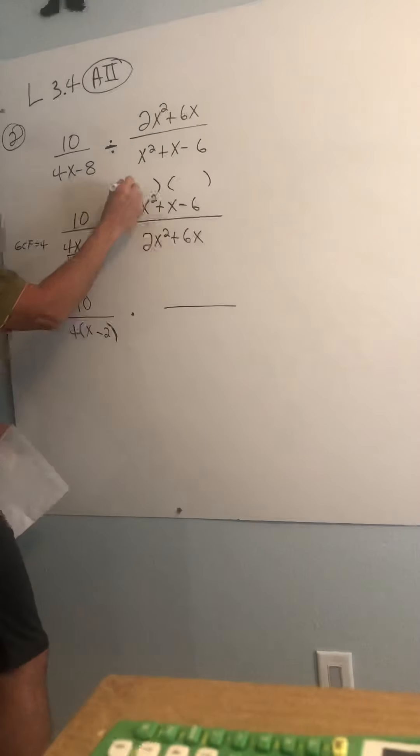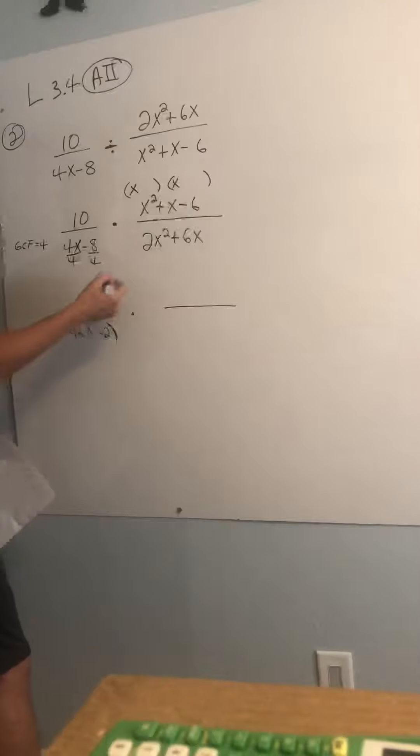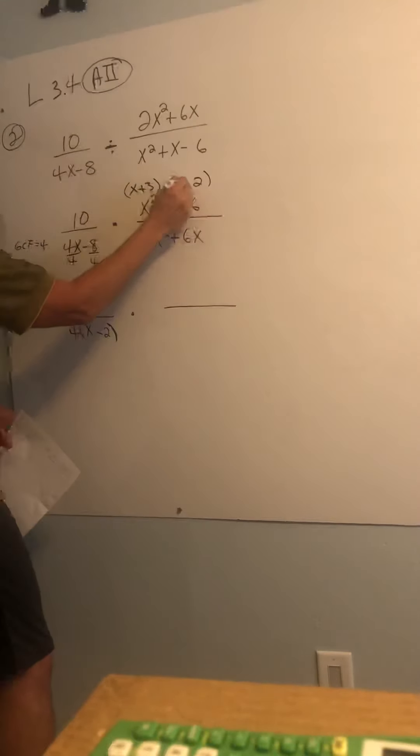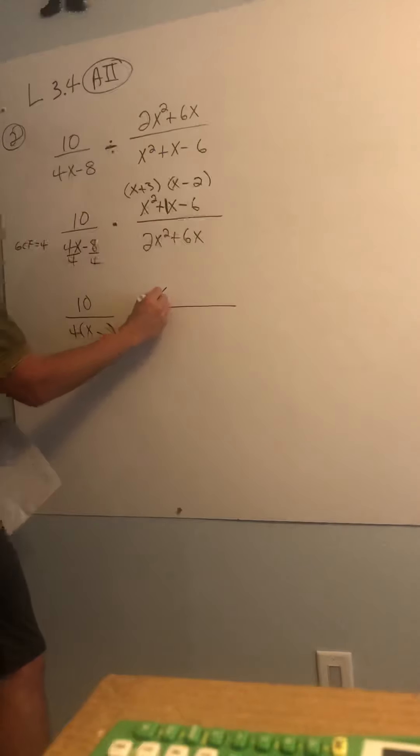x squared is an x times x. 6 is 2 times 3, 1 times 6, but I'm looking for a 1 here in the middle. So, I'm going to go with 3 and 2. Signs are different. I want a positive, so the higher factor gets the positive. And then I'm going to rewrite this over here. I only got one more, I swear.